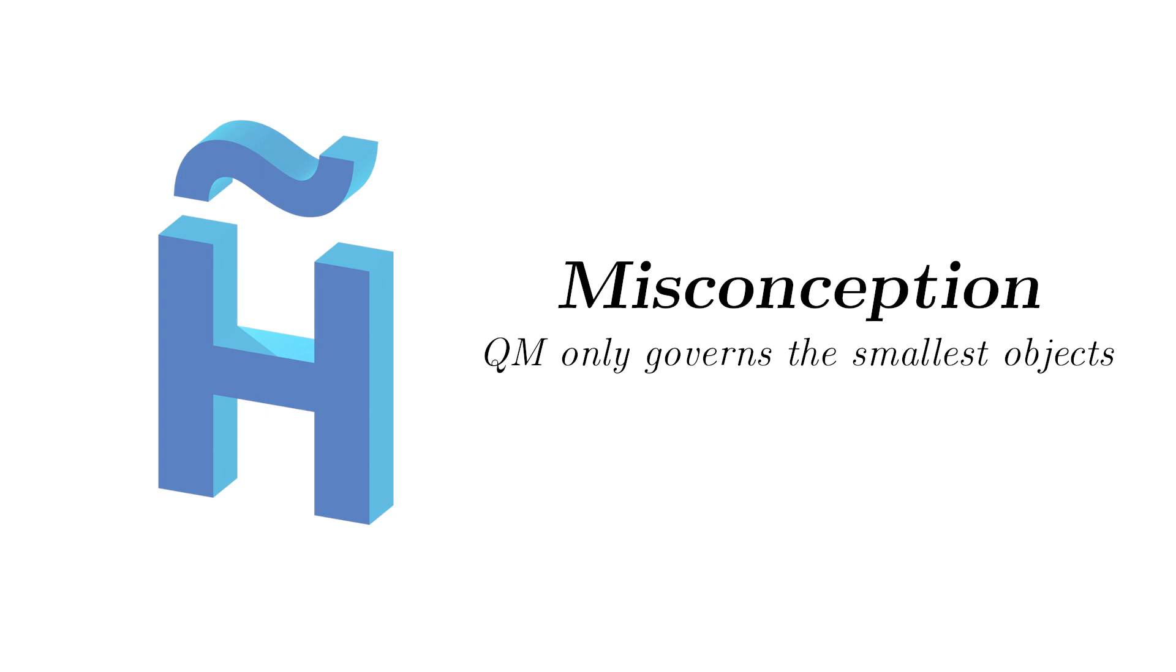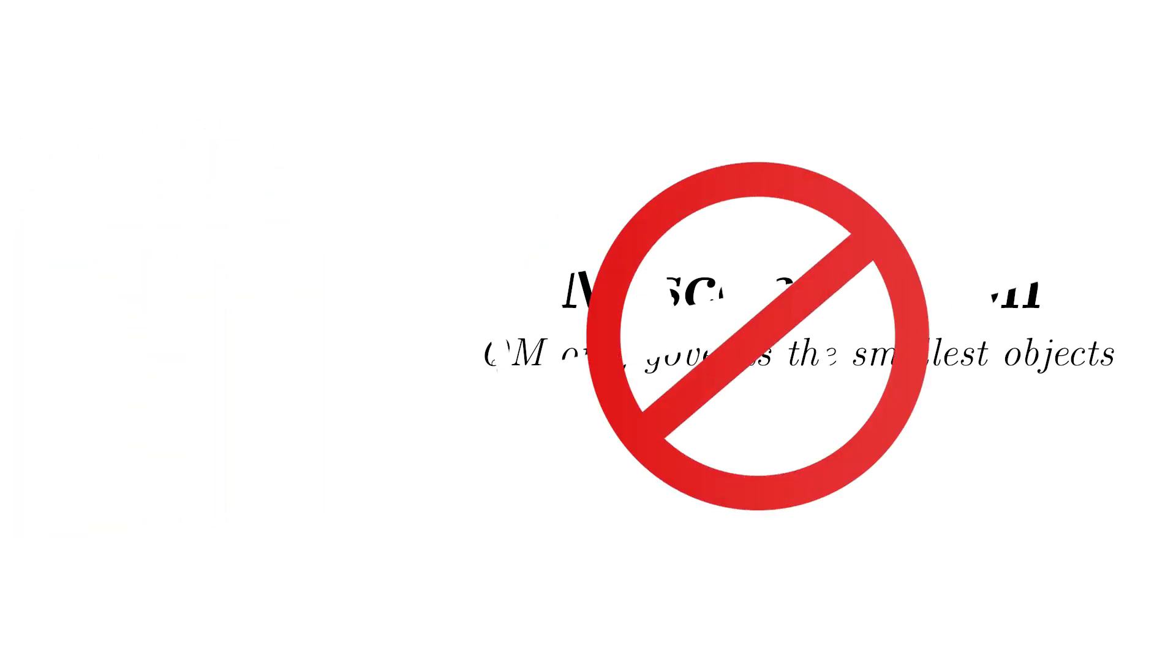Another common misconception in quantum mechanics is that it only governs the smallest objects. But now, let's see where you can always use quantum mechanics no matter what. Let me quickly talk about the double-slit experiment, and we'll get to the point.